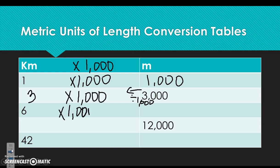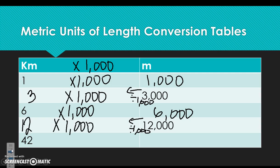6 times 1,000 is 6,000 going from kilometers to meters. Going the other way, from meters to kilometers, divide by 1,000 to get 12 — check: 12 times 1,000 is 12,000. And 42 kilometers times 1,000 equals 42,000 meters.